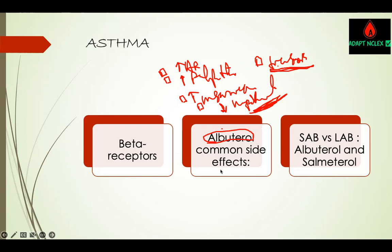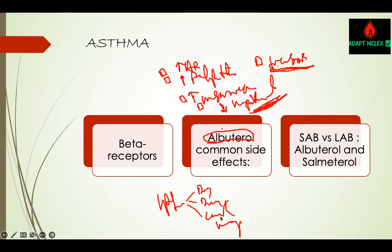Ipratropium, which is an anticholinergic, causes dry eyes, dry mouth, constipation, and urinary symptoms. Every time you give anyone an anticholinergic: dry eyes — so if they have glaucoma, avoid it — dry mouth, constipation as it slows the gut, and urinary retention. These are classic anticholinergic signs and symptoms they can ask about in select-or-apply questions.